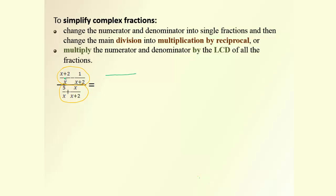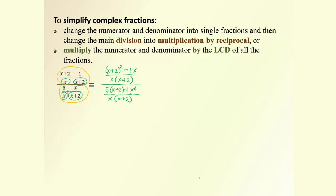In the numerator, looking at the two denominators, the lowest common denominator is x(x + 2). Therefore, the numerator of the first fraction, originally (x + 2), will be multiplied by the missing factor (x + 2), giving (x + 2)². Then we subtract 1 times x. In the big denominator, combine the small denominators as a single LCD, multiply 5 by the missing bracket, and multiply x by the missing factor x, giving x².